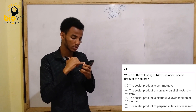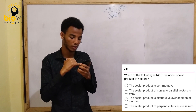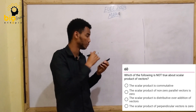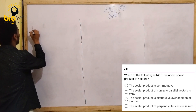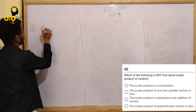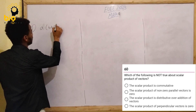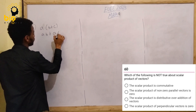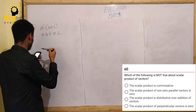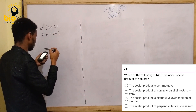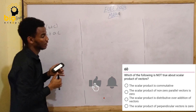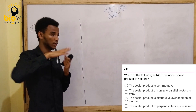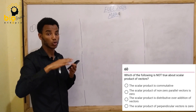The scalar product is distributed over addition of vectors: a dot (b + c) equals a dot b plus a dot c. The scalar product of perpendicular vectors — it will not be zero because cos 90 is involved, making the result zero when vectors are perpendicular.